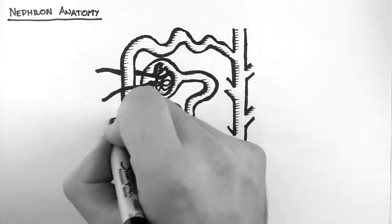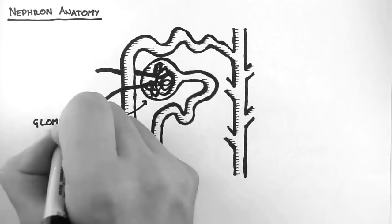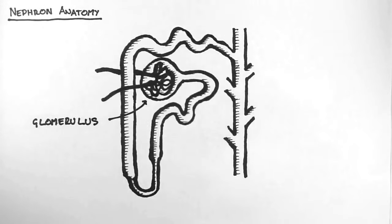So, let's start at the beginning. Here we have the glomerulus, which is where the blood is filtered. And you can see a ball of capillaries inside the glomerulus. I'm not going to talk much about the glomerulus, because it is covered in detail in the next video in the series.